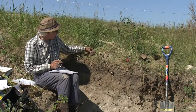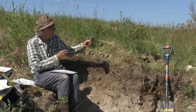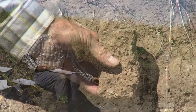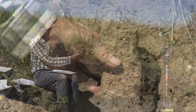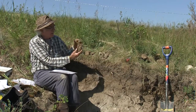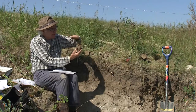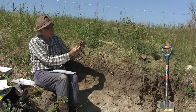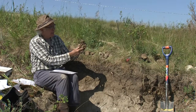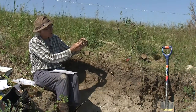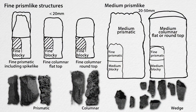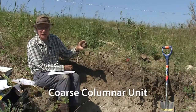The B horizon has these relatively large structural units oriented along their long axis in the profile. To distinguish between prism-like and columnar, we need to look at the top of them — a prism-like one has very sharp faces and a flat top, so these would be columnar units. For the class or size we look at the widest diameter, not the long axis. These ones are over 50 centimeters at their widest diameter, so we would say they're coarse columnar units.